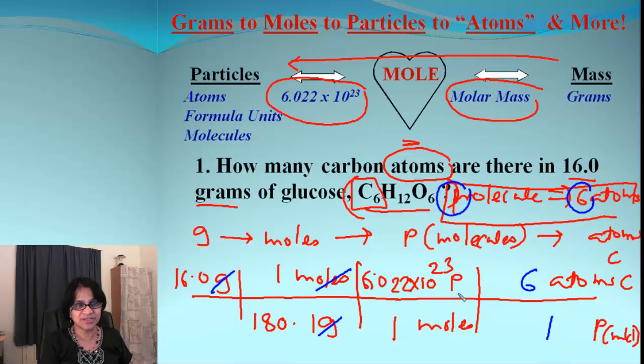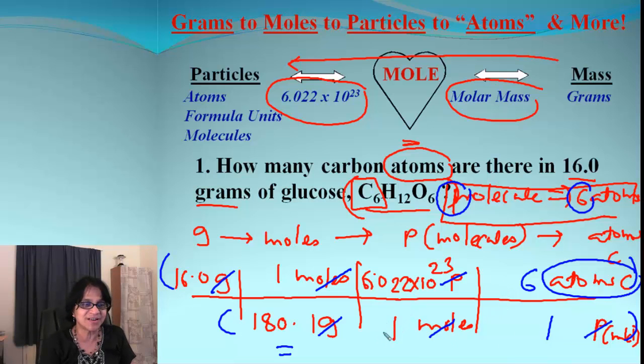Cancelling the units, common units, we end up having final answer as atoms of carbon. Make sure you are multiplying all the things in numerator and dividing by all the things in denominator. So, the final answer which I got here is 3.21 times 10 to the 23rd atoms of carbon. All right. Let's go to the next one.